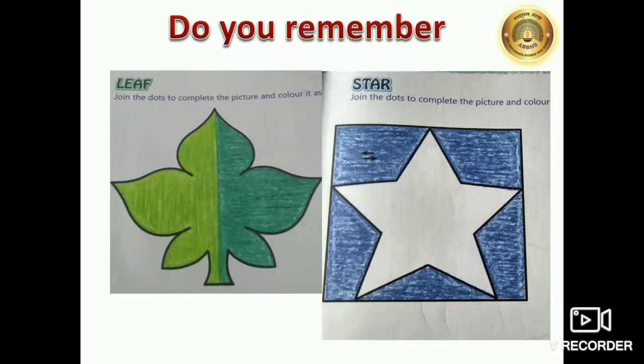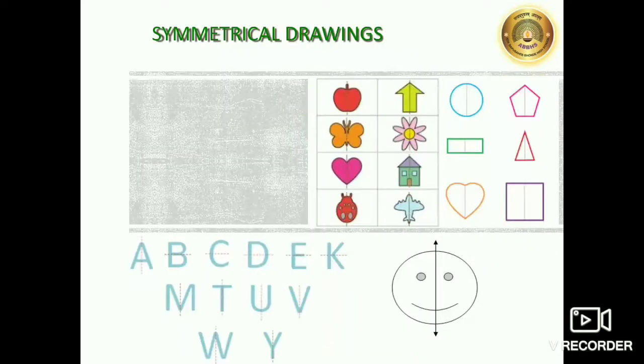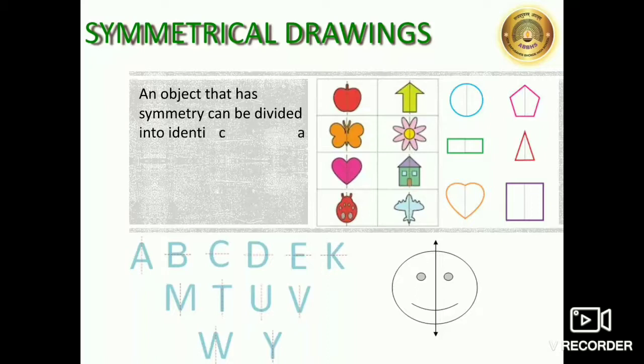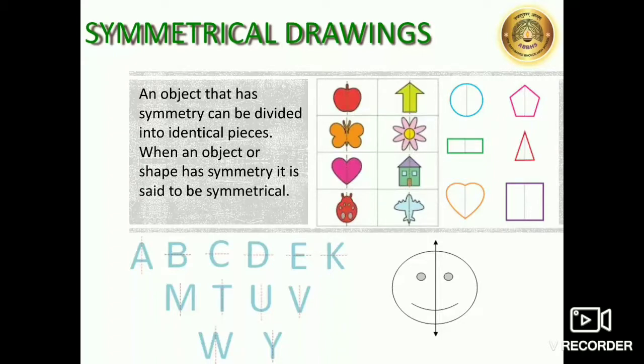So now you all are thorough with what is symmetry. But just to recall, it means something which is identical on both sides of the mirror line or dividing line but facing opposite to each other. An object that is divided into two identical pieces is said to be symmetrical. When an object or shape has symmetry, it is said to be symmetrical.